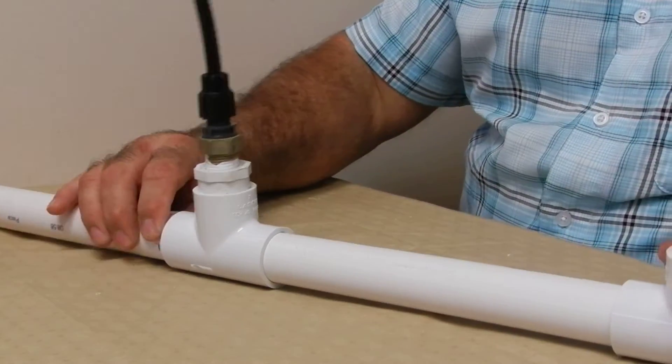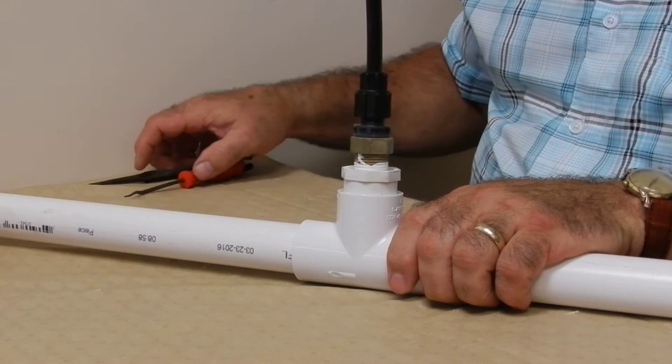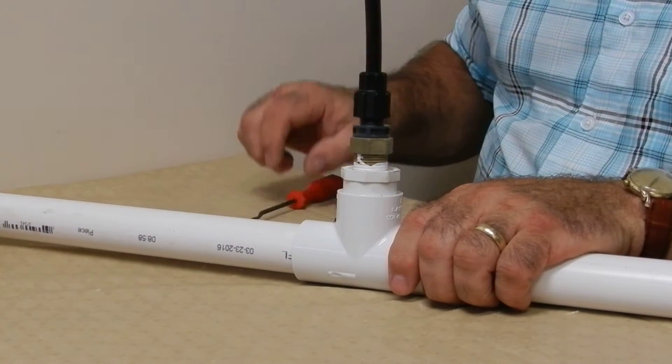The chlorine injector looks like one of these two. This is the old style injector which is very common and we sell a lot of replacement parts for it.